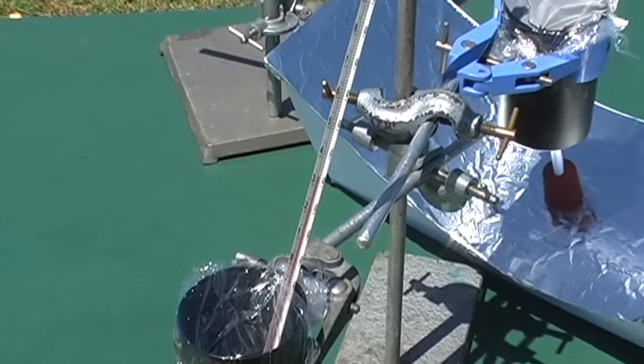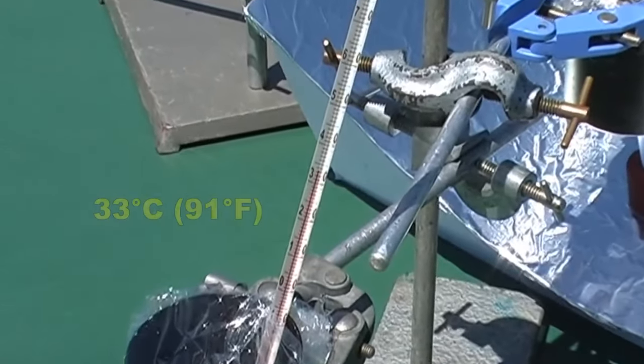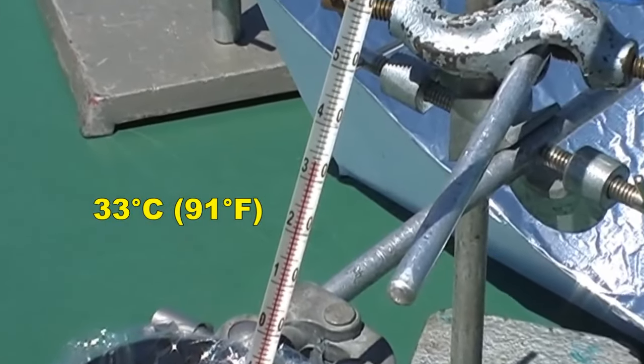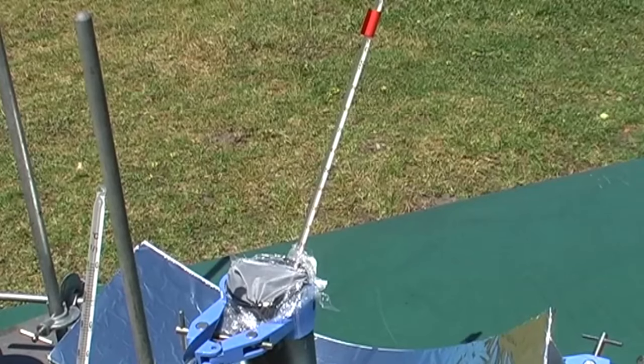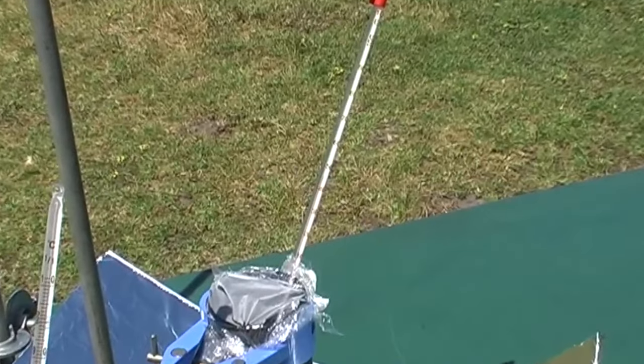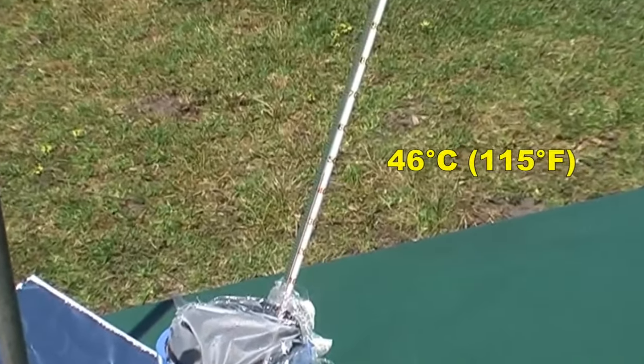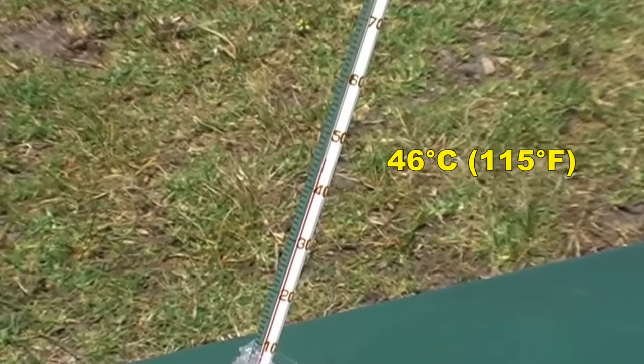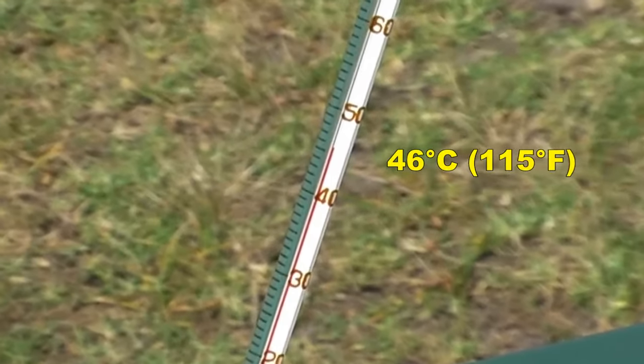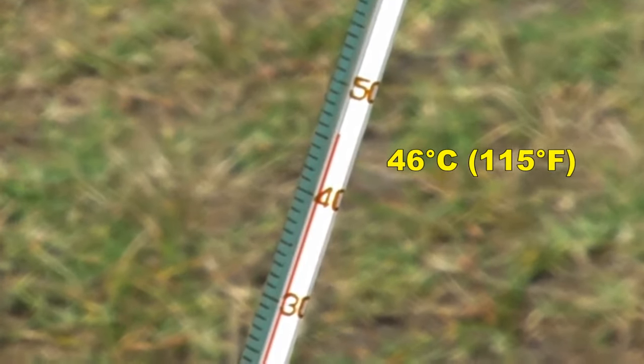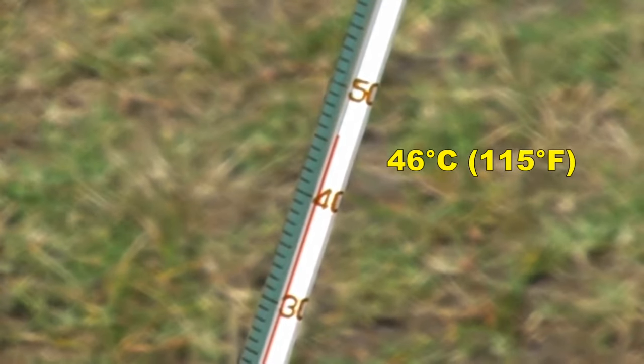After ten minutes, the water in the control can reached about 33 degrees Celsius, while the can of water placed at the parabola's focal point had reached a temperature of about 46 degrees Celsius. To get the best results, you may need to adjust the position of the reflector every five minutes or so, since the sun is moving across the sky.